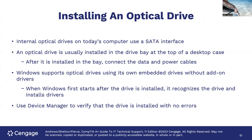Optical drives are usually installed in the drive bay at the top of a desktop case, though you can put them lower. After it's installed in the bay, connect the data and power cables. Windows supports optical drives using its own embedded drivers without add-on drivers — you used to need manufacturer-specific drivers, but that's no longer necessary. When Windows first starts after the drive installs, it recognizes the drive and installs drivers automatically. Use Device Manager to verify the drive is installed with no errors — an error shows as a yellow exclamation mark.